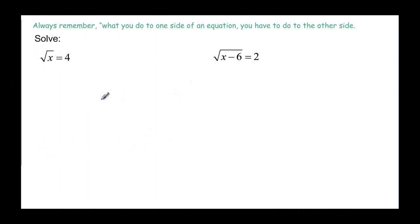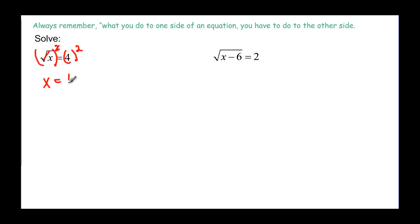So how does that apply with an equation? Remember, what you do to one side you have to do to the other side. So if I want to get rid of the square root by squaring on this side, I have to square on this side as well. The square cancels the square root leaving us with x, and 4 squared is 16. It's not plus or minus this time because we know it has to be positive underneath the radical, so x equals 16.